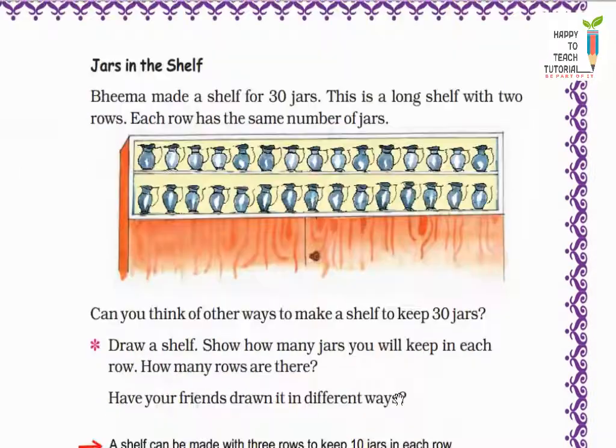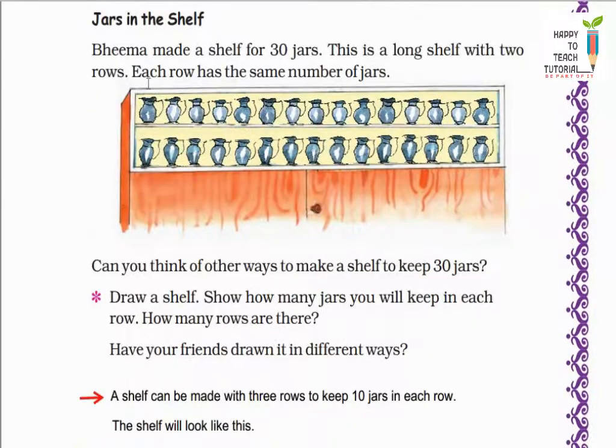Now next is jars in the shelf. Here Bhima made a shelf for 30 jars. This is a long shelf with 2 rows. Each row has the same number of jars. You can see in this picture also there are 2 rows of shelf. In the first row there are 15 jars and in the second row there are 15 jars. So 15 plus 15 is equal to 30 jars are there. Otherwise you can do 15 into 2 is equal to 30 jars are there.